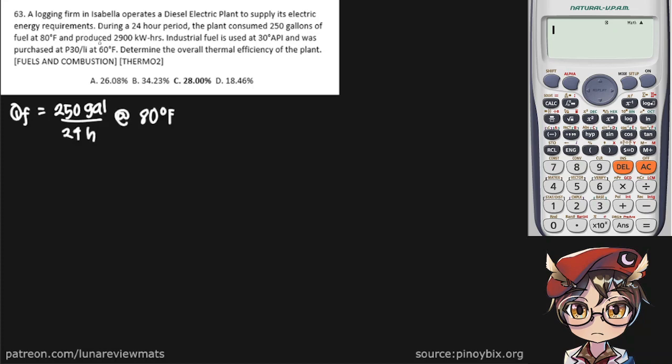And produced 2,900 kilowatt-hours of net work. Industrial fuel is used at 30 degrees API and was purchased at 30p per liter at 60 degrees Fahrenheit. Determine the overall thermal efficiency of the plant.